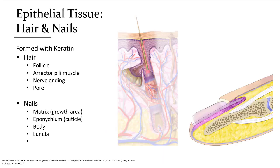Another part of epithelial tissue is our hair and our fingernails. Hair is actually made by epithelial tissue. We have parts of the hair — the follicle and erector pili muscle, which makes your hair stand on end when you're scared or cold — and the pore where the hair comes out. We also have the fingernails, with a matrix which is a growth area, the epicondrium which is the cuticle, the body and the lunula.